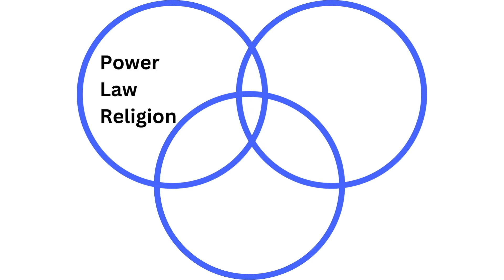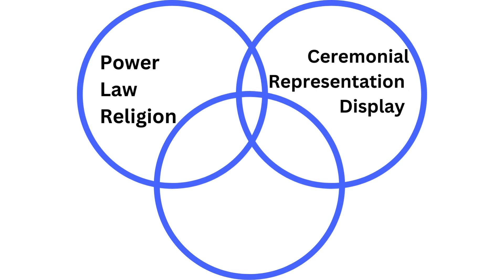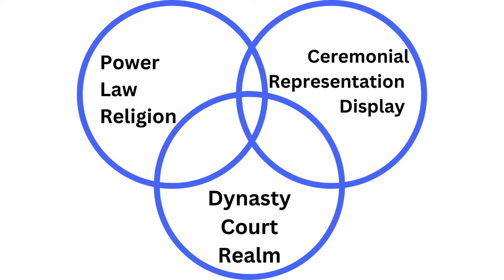Circle 1: Power, law, and religion. These are the bedrock of monarchy, shaping the monarch's fundamental role. Circle 2: Ceremonial representation and display. These elements articulate the monarch's relationship with power, law, and religion, broadcasting their role to dynasty, court, and realm — parts of Circle 3. These represent the monarch's domain, the stage upon which they enact their rule. At the heart of these circles lies the crown, a potent symbol where all elements converge, defining the monarch's prerogatives and limitations. So let's first talk about power, law, and religion in more detail.